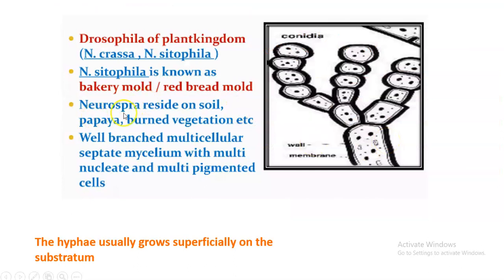Neurospora is normally seen on soil surfaces. On papaya surfaces, we commonly see this orange-like formation — that is the infection by Neurospora. After a forest fire, on top of the burned vegetation, you can see Neurospora, which is having a well-branched, septated mycelium. The hyphae will be growing superficially on top of the substratum, forming just like a mat.